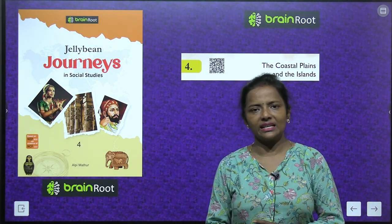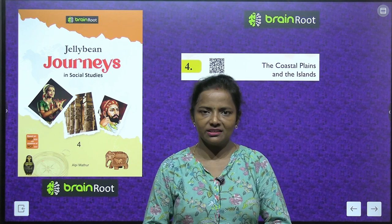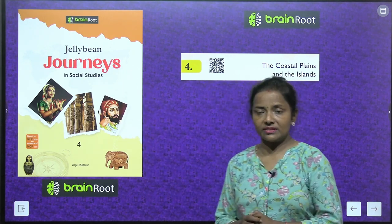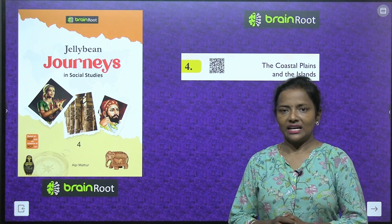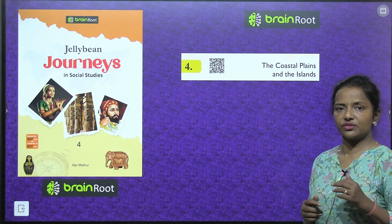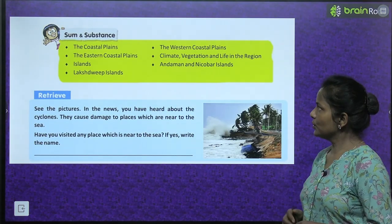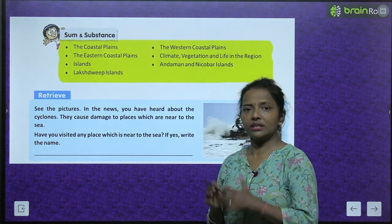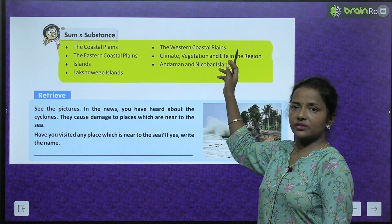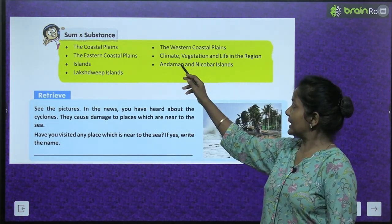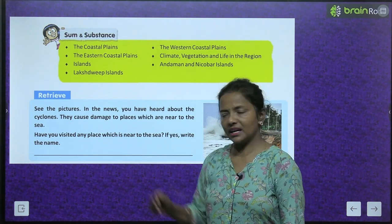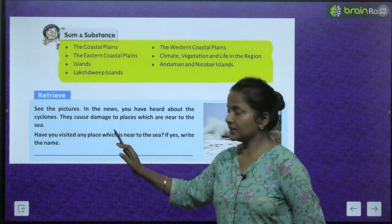Hello shining stars, a very warm welcome to your social studies class with your mentor Aparajita. Today let's start Chapter 4 of class fourth, Jellybean Journeys in Social Studies by Brain Root series. We are going to start the chapter: The Coastal Plains and the Islands. The points we are going to cover are: the coastal plains, the western coastal plains, the eastern coastal plains, then climate, vegetation and life in the region, islands, Andaman and Nicobar Islands, and Lakshadweep Islands.